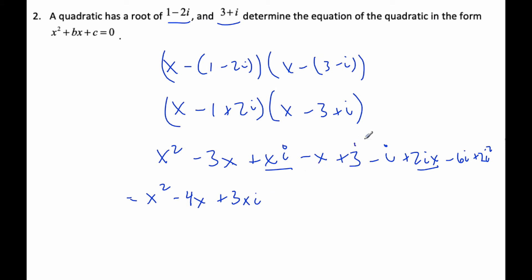And then I have a constant 3, and I got a 2i squared which is minus 2, so 3 minus 2 is plus 1. And then I also have minus 7i.